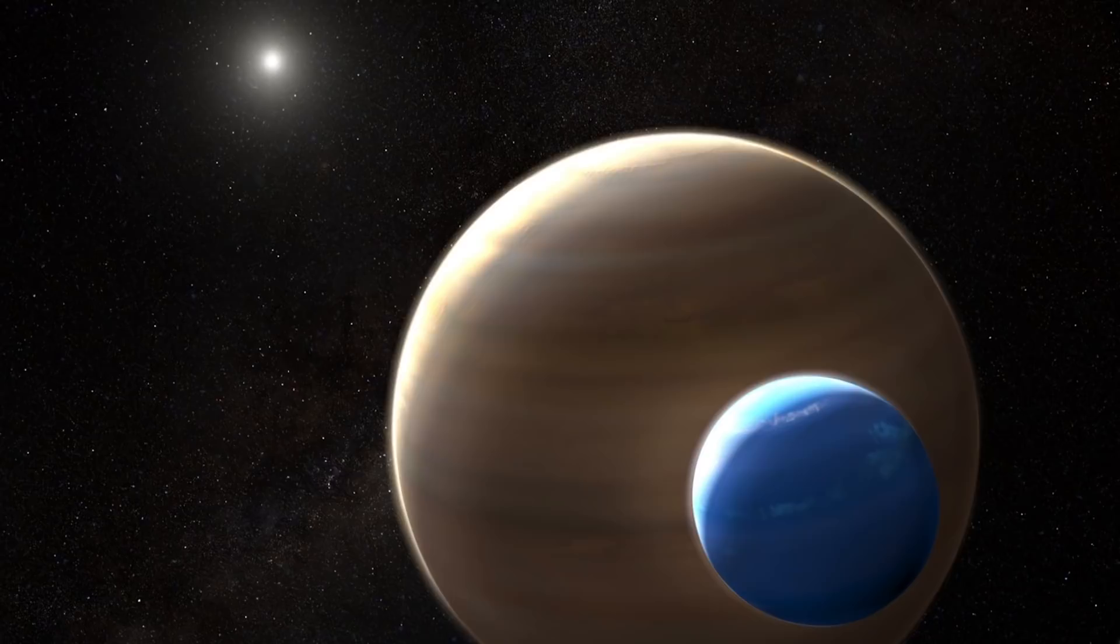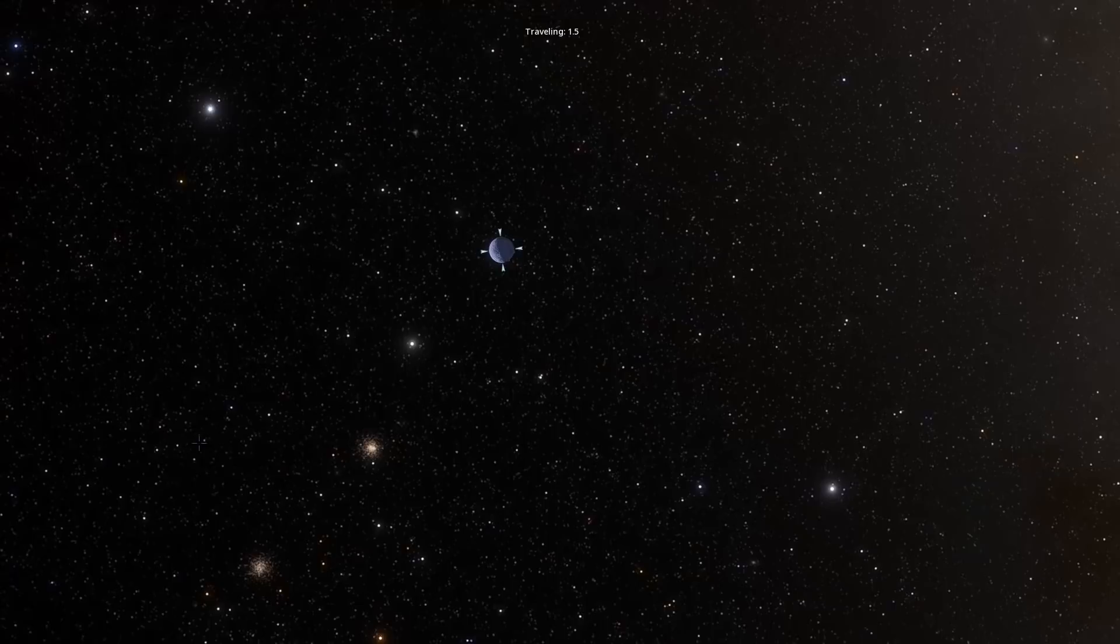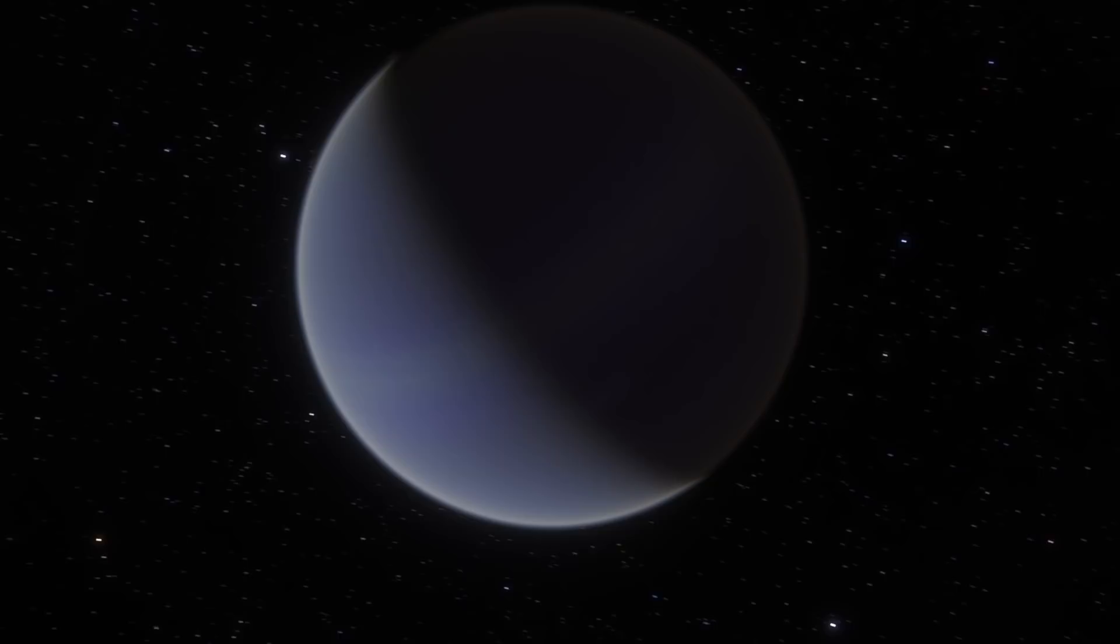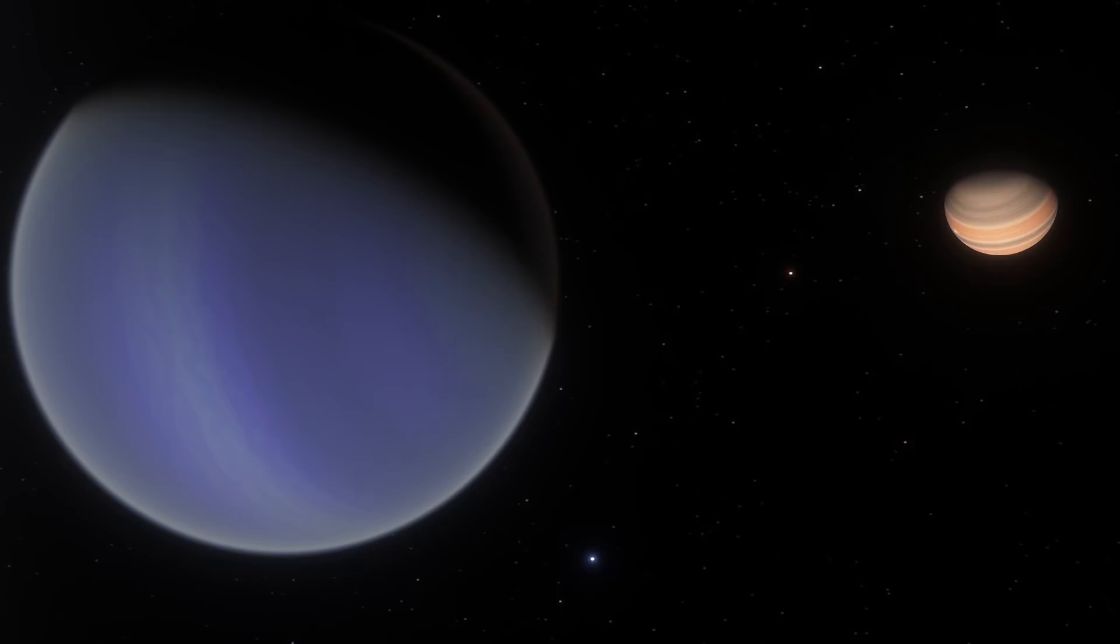So for example, back in 2017, Kepler 1625b that you see right here was potentially identified to have some sort of a Neptune-sized moon around it, although it most likely resembles something like this if it does exist. And it's relatively large and actually relatively massive, even compared to the planet that it's orbiting.